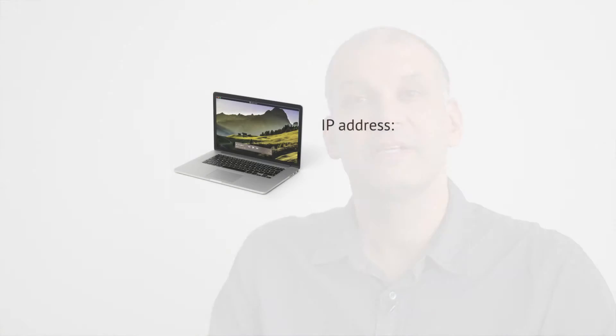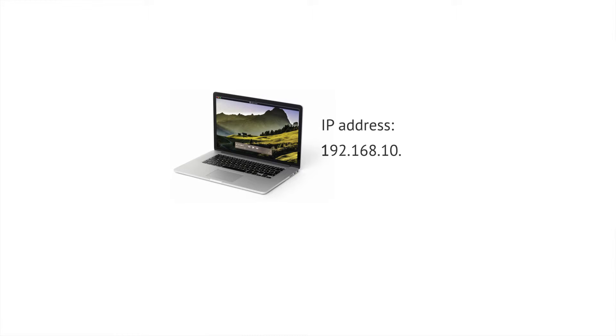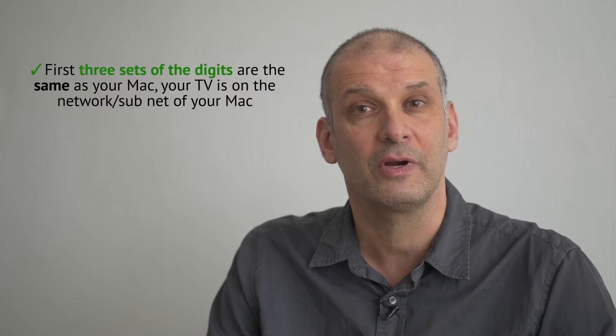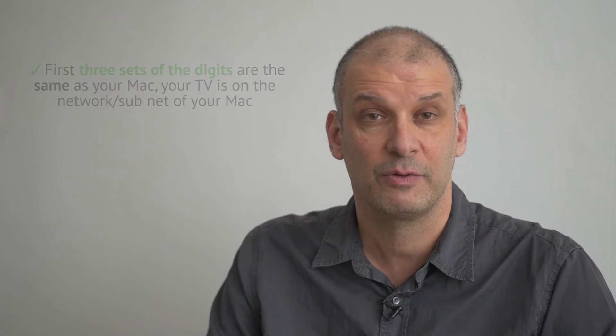This is what you should look for on your Mac and on your TV. Your Mac has an IP address — this is the address that it gets from your router. Note that the first three sets of digits are 192.168.10. Your TV has an IP address as well. When the first three sets of digits are the same as on your Mac, this means that your TV is on the same network and the same subnet as your Mac.